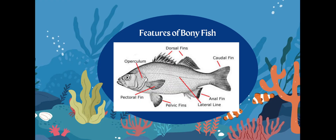The first thing you need to know is the features of a bony fish. Whenever I think of the dorsal fin, I always think of the sharks going dorsal, dorsal, dorsal — that's the dorsal fin. That's what we see sticking out of the water, so it's going to be across the top of the fish.